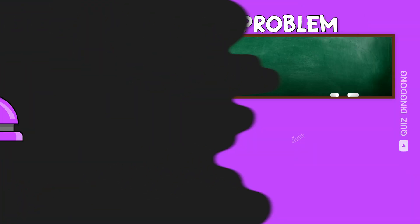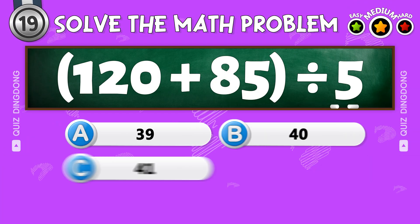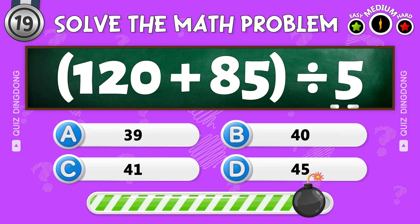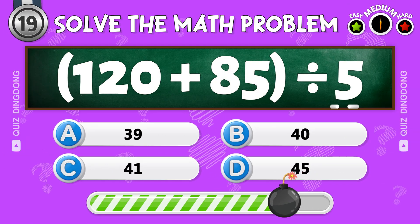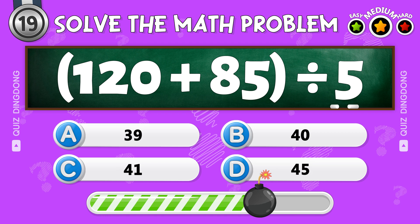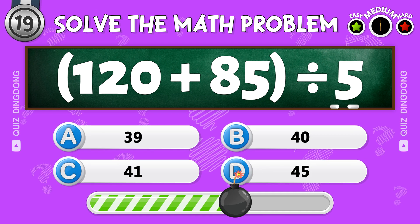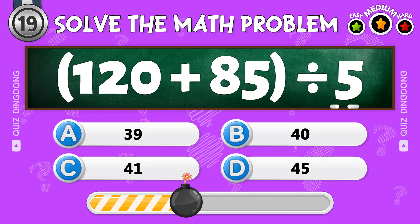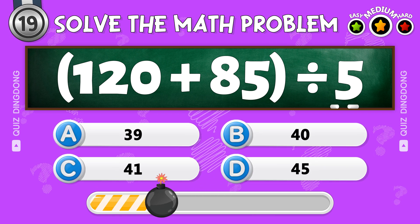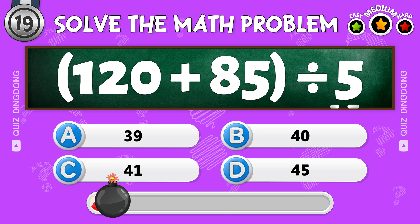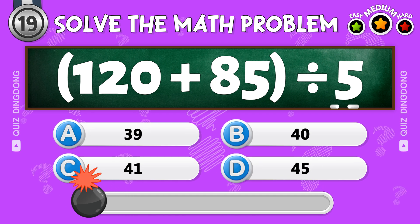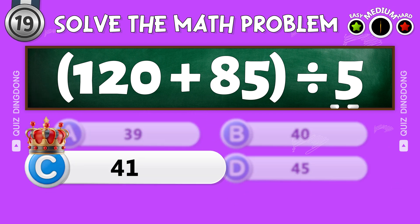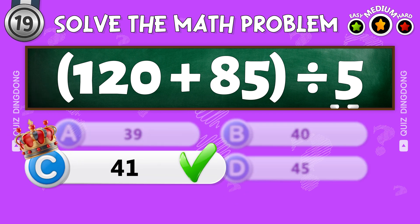Almost there! What's 120 plus 85 divided by 5? That's correct! The answer is 41!